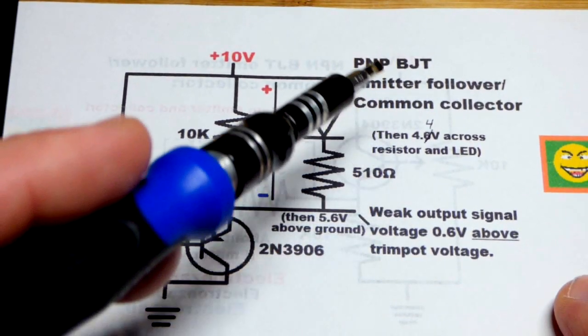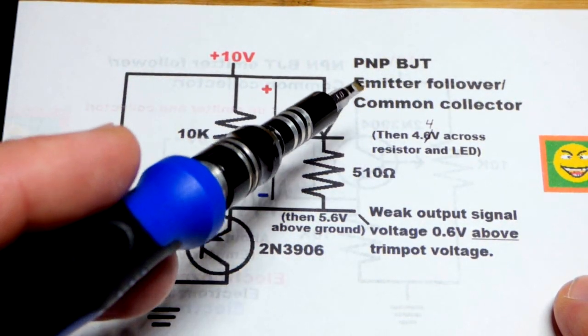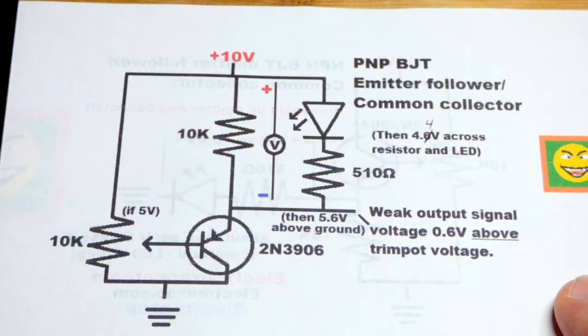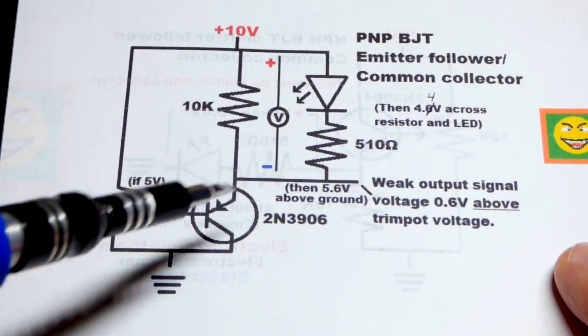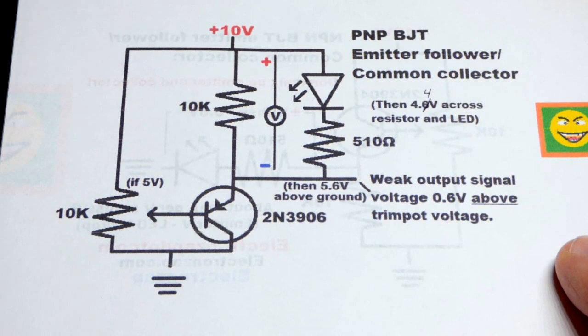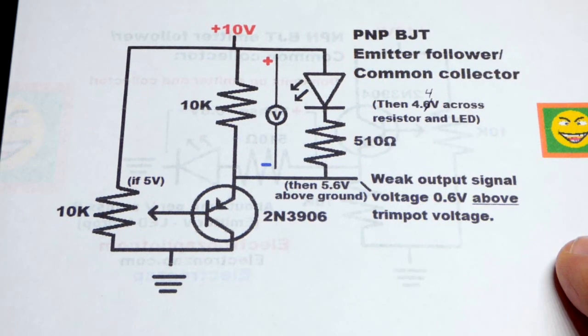So now in this video, we're going to look at the PNP bipolar junction transistor emitter follower. You could also call it a common collector, two names for the same circuit, and maybe even you could call it a voltage follower, although I think I see that more with op amps than transistors.